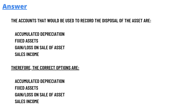The correct answer: the accounts that would be used to record the disposal of the assets are accumulated depreciation, fixed asset, gain and loss on the sale of asset, and sales income. Therefore, the correct answers are these four.